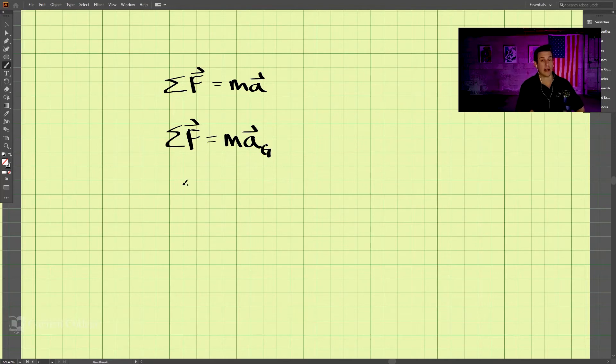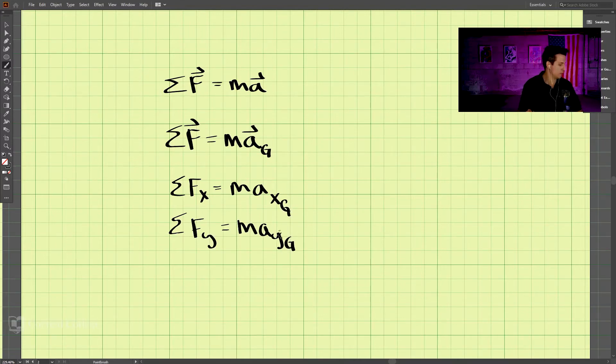But still, we can break this down into X and Y components. So we have the sum of the forces in the X direction equals the mass times the acceleration in the X direction. And the sum of the forces in the Y direction is then equal to the mass times the acceleration in the Y direction at the center of gravity for both of these. Make sure you're adding the G to both of those.